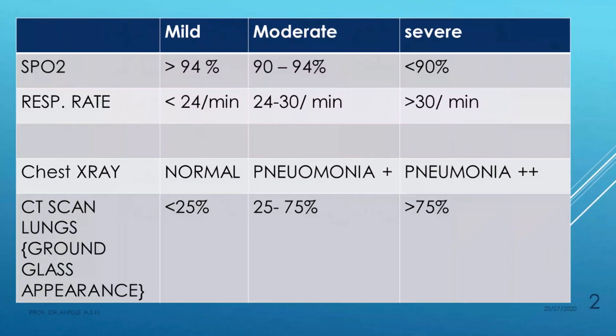Regarding SpO2, we should divide COVID patients into mild, moderate, and severe. If SpO2 is more than 94%, it is considered mild. If it is between 90 and 94%, it is moderate. If it is less than 90%, it is considered severe.